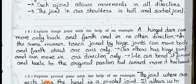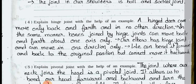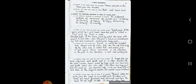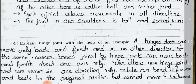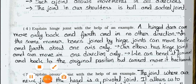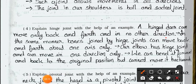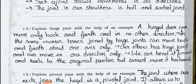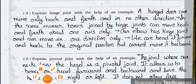Question 4: Explain the hinge joint with the help of an example. A hinge door can move only back and forth, in no other direction. In the same manner, bones joined by a hinge joint can move back and forth about one axis only. Our elbow has a hinge joint and can move in no other direction — we can bend it forward and back to the original position, but cannot move it backwards.